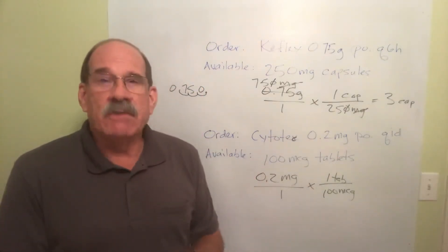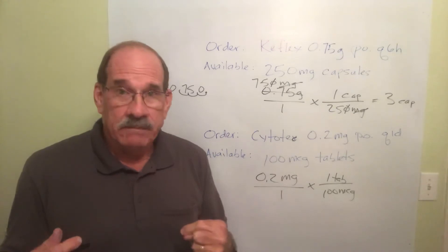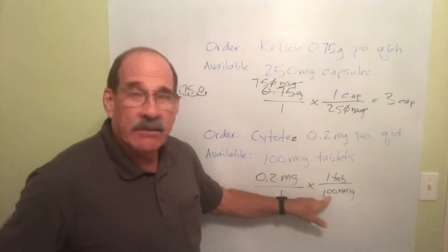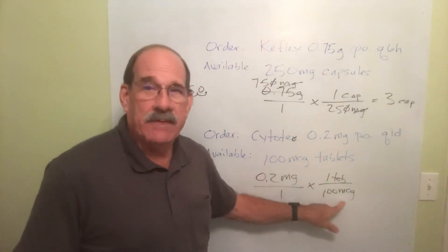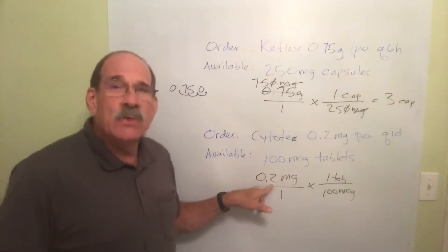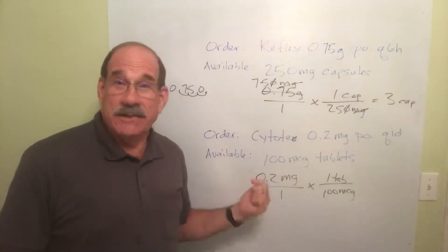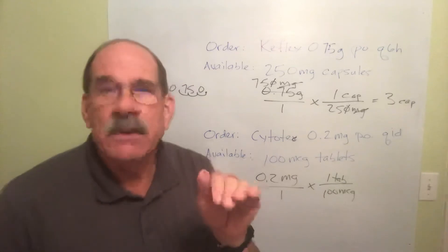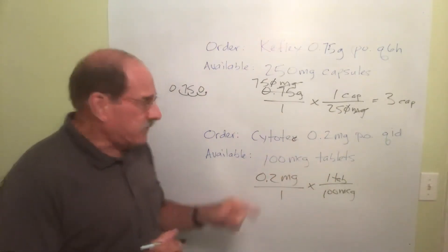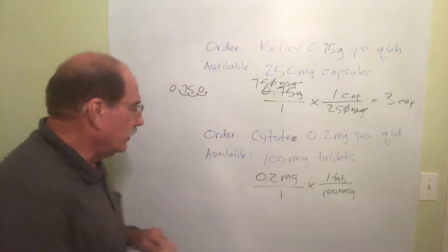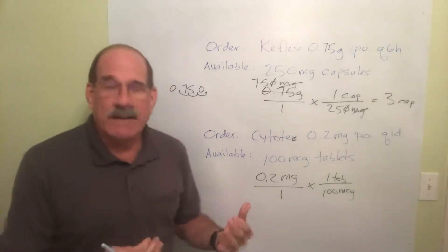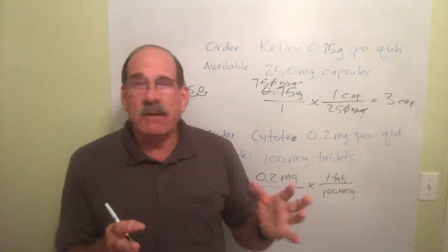So I must convert one of those into the other form. I could, if I wanted to, convert these 100 micrograms into how many milligrams that is. I could do that, or I could convert this milligrams into micrograms. Let's do that. Okay, does it matter? It doesn't matter. You do one or the other, of course not both. Do one or the other.